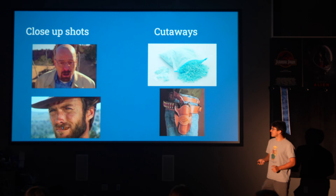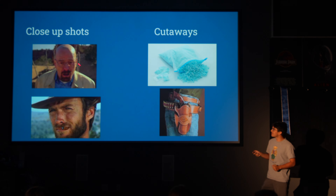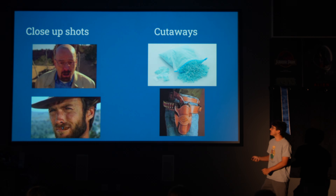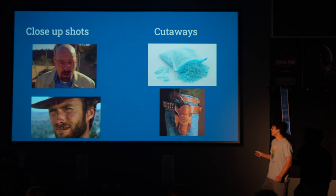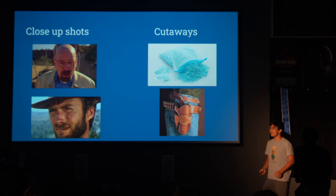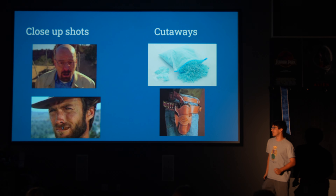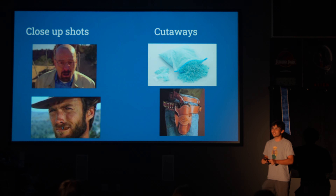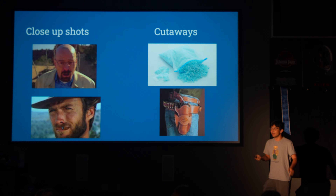Here are some other shot examples. You have close-ups — Walter White, and you've got a cowboy. Cutaways are anything relevant to the scene: something relevant to Walter White, and for the cowboy it would be something like a holster. If they bring up something in the conversation like going outside, you'd cut to something relevant like that. It helps break up the scene so you're not constantly looking at characters' faces, and gives a little more leeway.